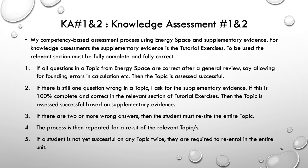The KA Knowledge Assessment is a competency-based assessment process using Energy Space and supplementary evidence. For Knowledge Assessments, the supplementary evidence is the tutorial exercise book. The relevant section must be fully complete and fully correct. If all the questions in a topic from Energy Space are correct — after a review, making sure rounding errors are fixed — then the topic is assessed as successful and I circle the S. If there is still one question wrong in a topic, I ask for the supplementary evidence; if this is 100% complete and correct in the relevant section of the tutorial exercises, I'll assess it as successful based on the supplementary evidence. If there are two or more wrong answers, the student must do a reset of the entire topic.